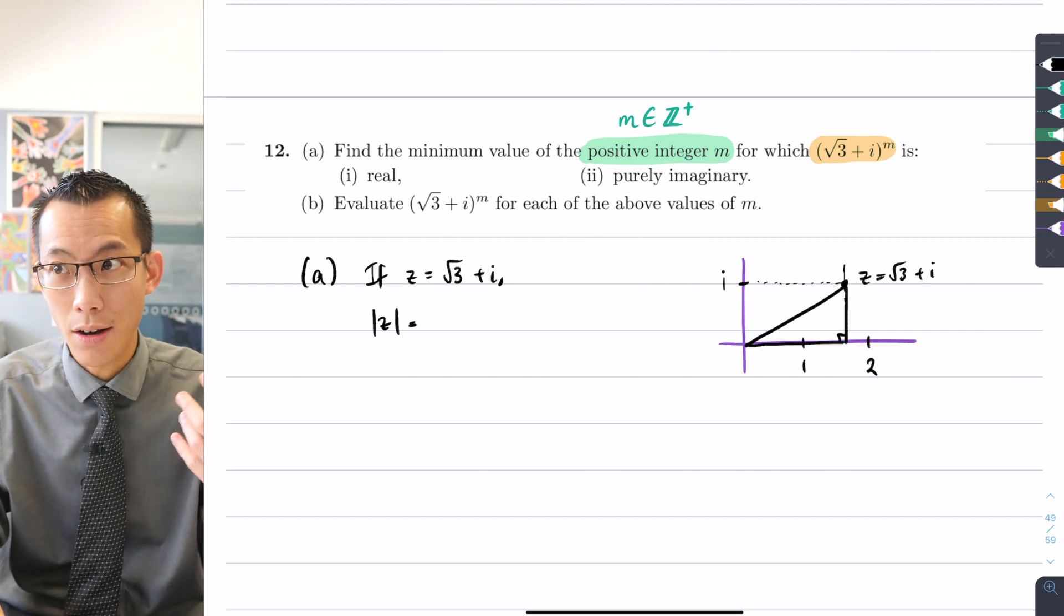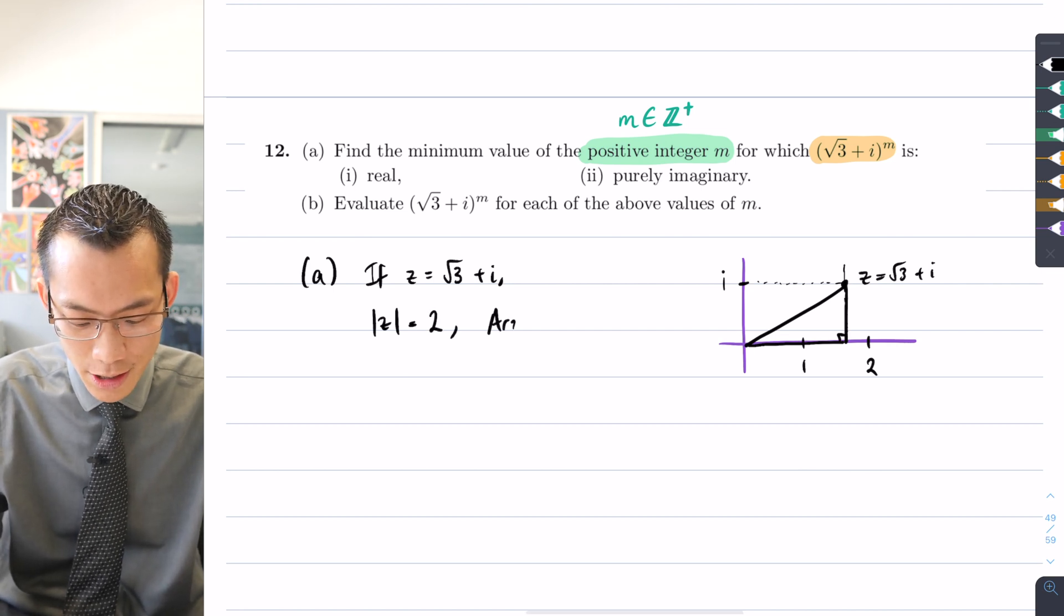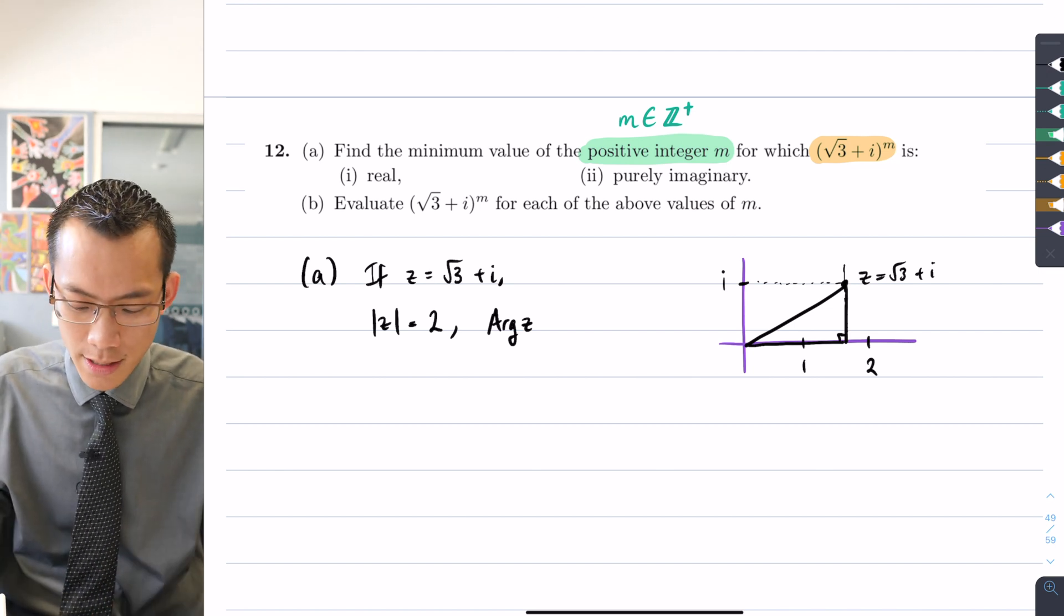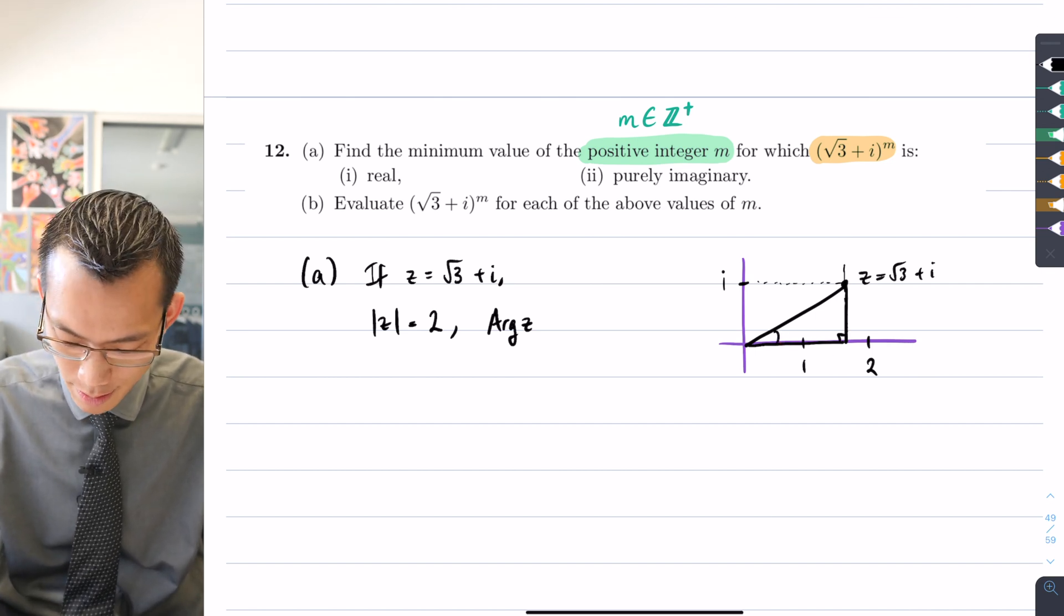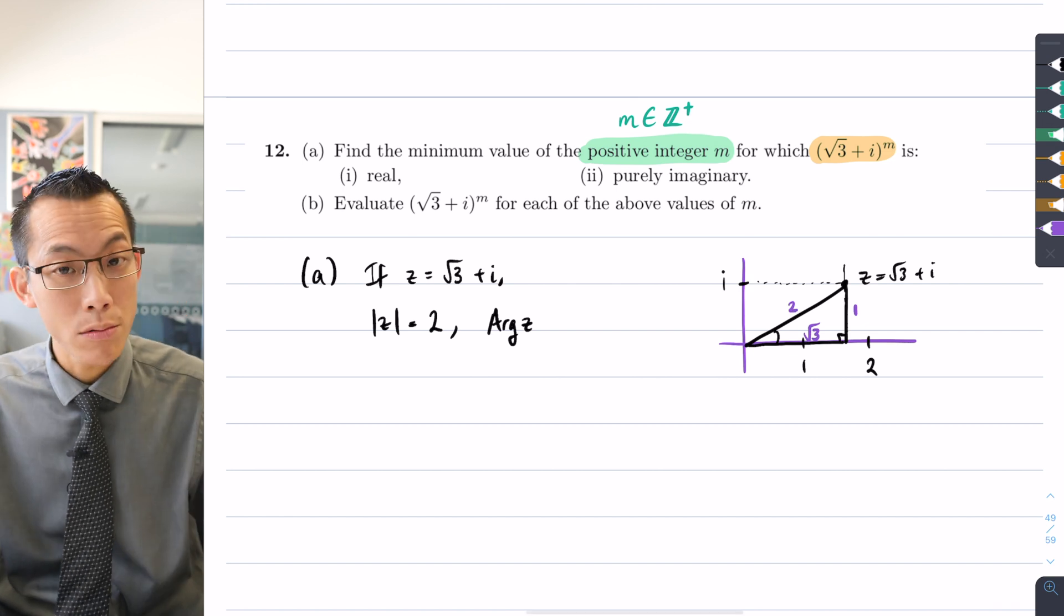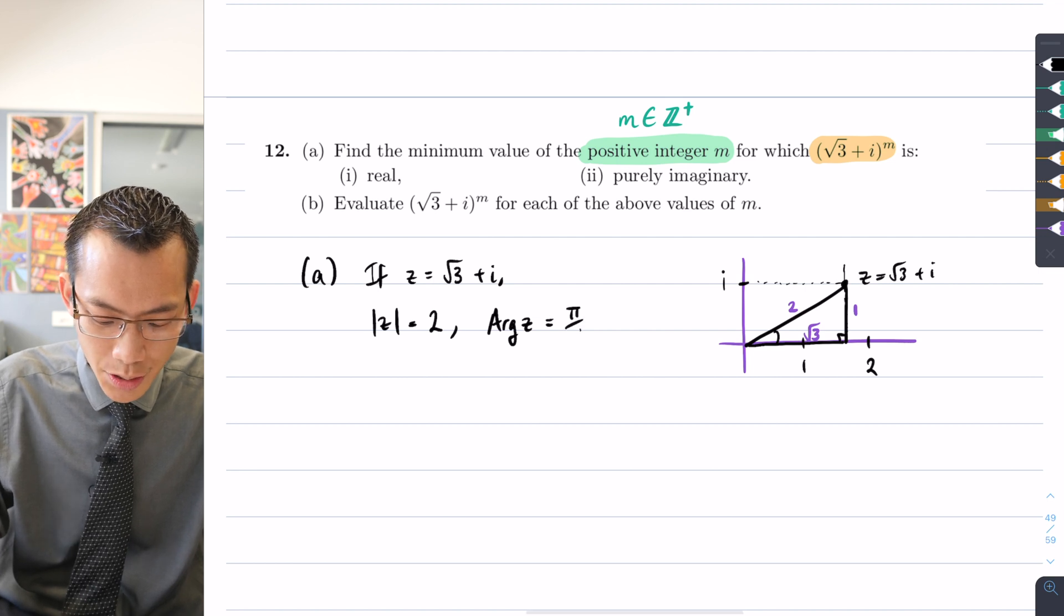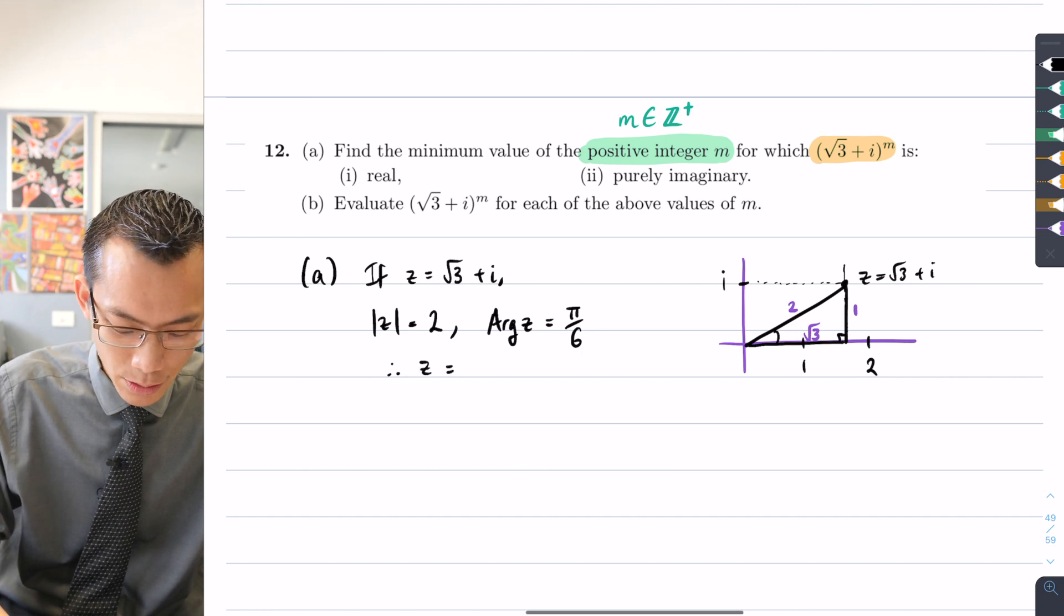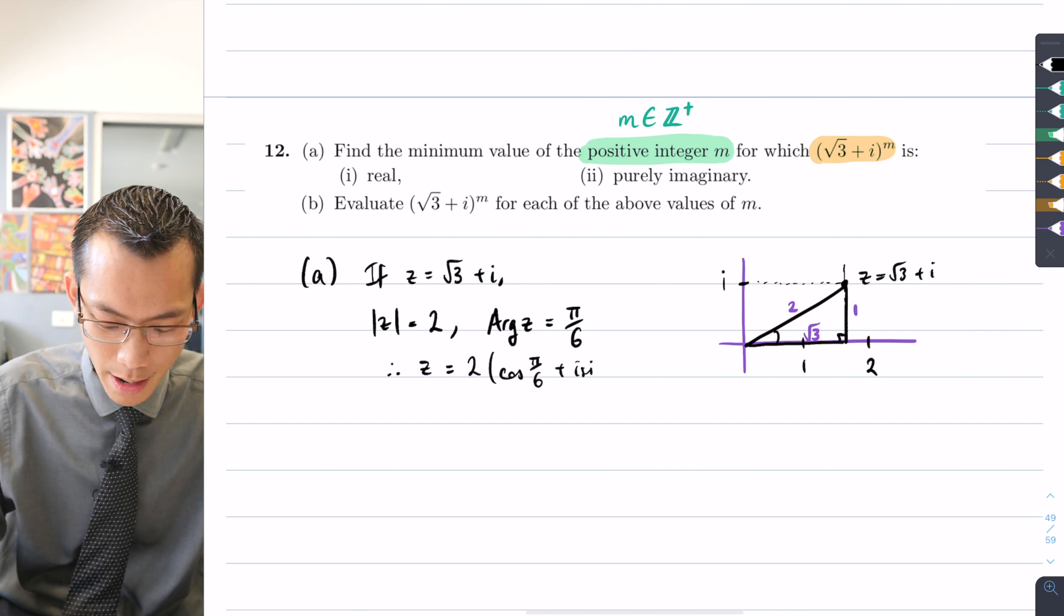I want to work out the modulus and argument for this complex number. The modulus is our distance to the origin, so it lives in this right angle triangle with sides 1 and √3. The modulus is √(1 + 3) = √4 = 2. The argument, the principal argument, is the angle here. In this 1, √3, 2 triangle, it's clearly π/6 that I'm after. So z = 2(cos(π/6) + i sin(π/6)).